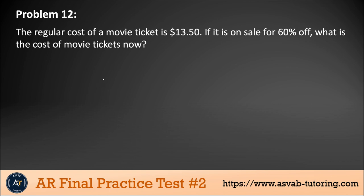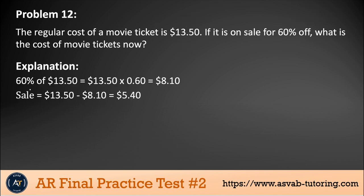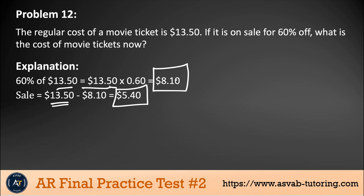Next problem: the regular cost of a movie ticket is $13.50. If it is on sale for 60% off, what is the cost of the ticket now? Anytime you have a percent, convert it to a decimal and multiply. That gives you the discount: $13.50 × 0.6 = $8.10. Subtract the discount from the original price: $13.50 − $8.10 = $5.40. So that is the correct answer.